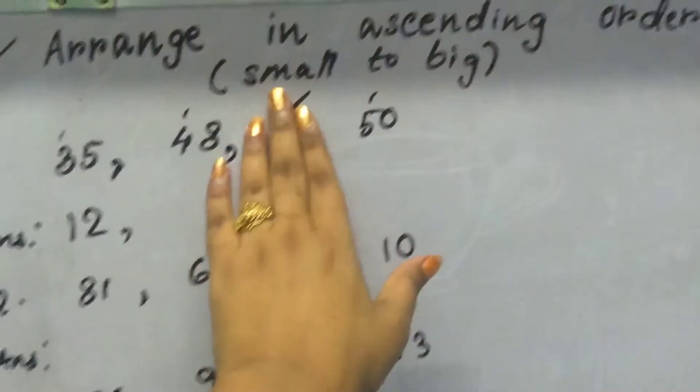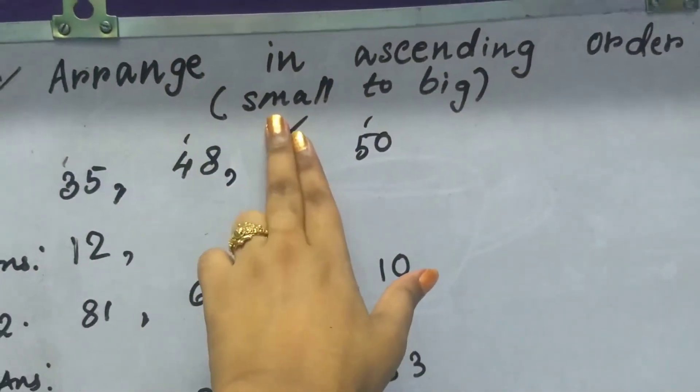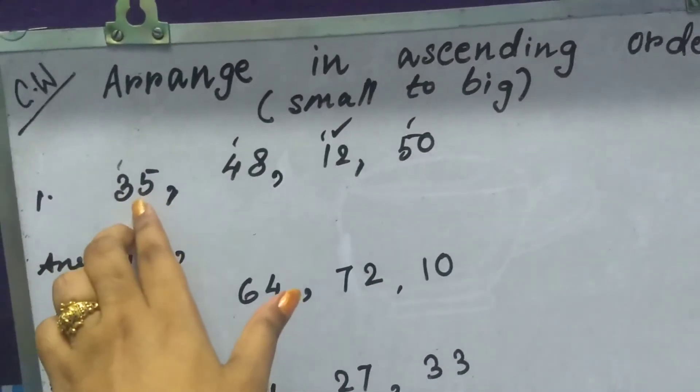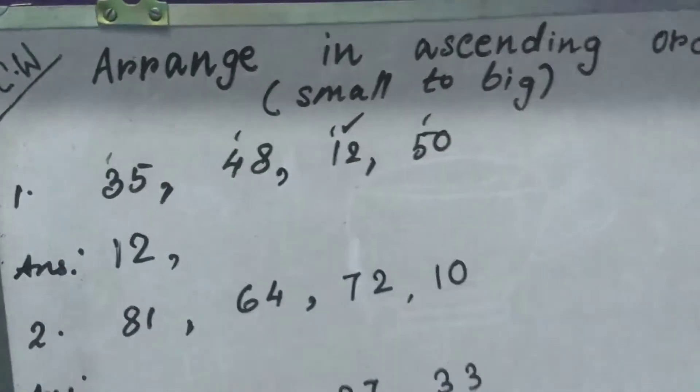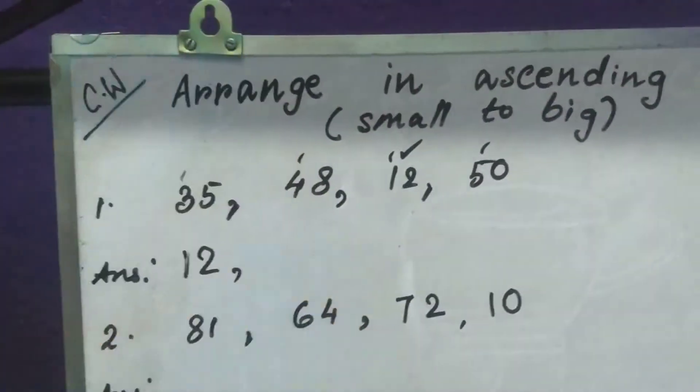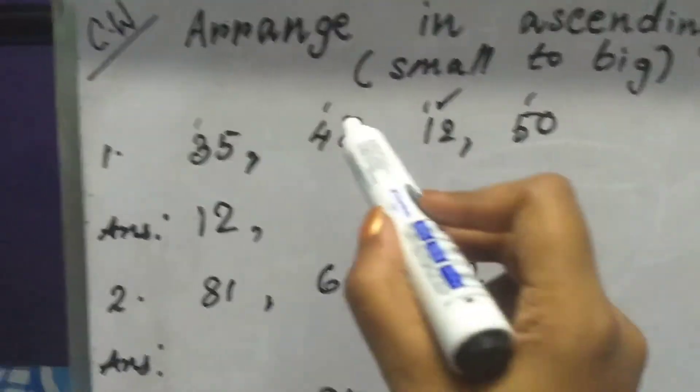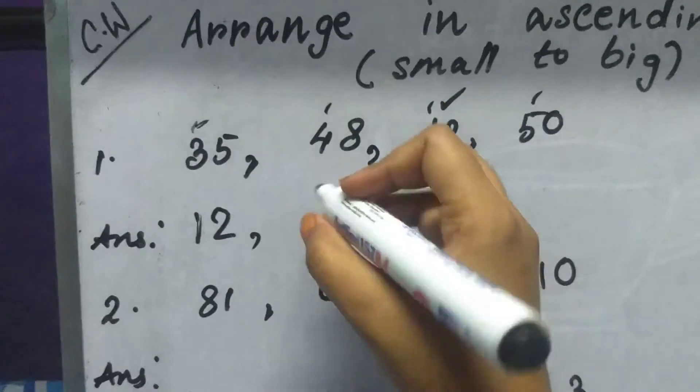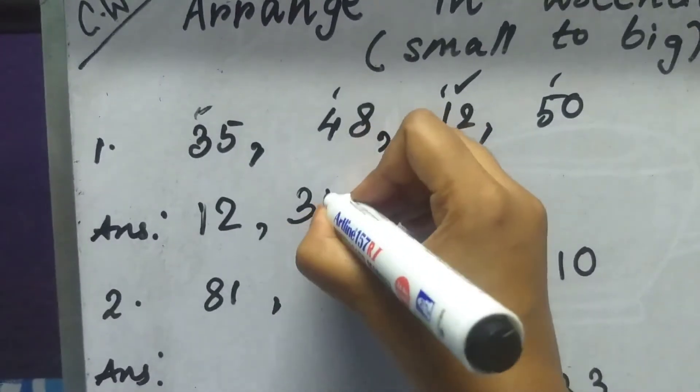Now we will not see this number. We will see rest of the numbers: 35, 48 and 50. Now among these, which is the smallest? 35. So write 35.